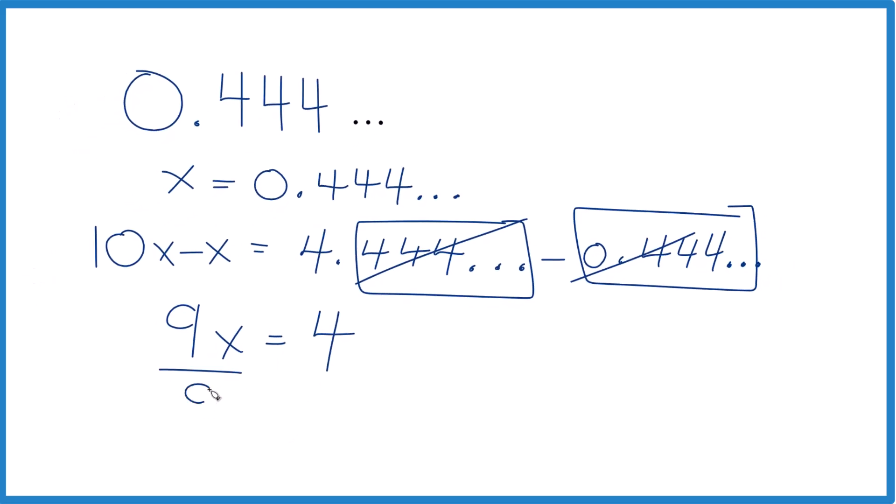Divide both sides by 9. Here 9 over 9 is 1, so that's gone. x equals 4/9. And that's it. We're done. 0.44 repeating. The decimal equals a fraction 4/9.